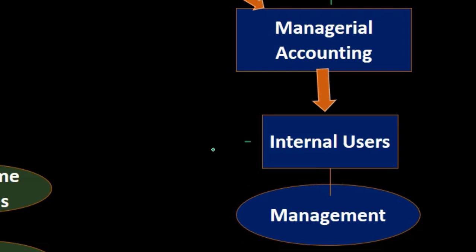Managerial accounting is geared toward management — the internal users. Management uses those same financial transactions as the base, but isn't required to present the information exactly as financial statements. They may compile data in different types of reports, often narrowing down into specific areas to make decisions about how different departments are doing relative to the business as a whole. Because managerial accounting is internal and users have intimate knowledge of the industry, there's less regulation — managerial accounting is guided by best practices.